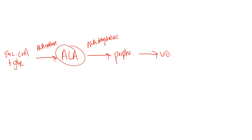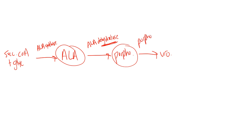So if you can remember that the reactant is what names the enzyme — except for the first one (ALA synthase) and the last one (ferrochelatase) — you don't need to worry about memorizing each enzyme name. For example, ALA goes to porphobilinogen with ALA dehydratase. Porphobilinogen goes to uroporphyrinogen with porphobilinogen deaminase. You just memorize the ending part.